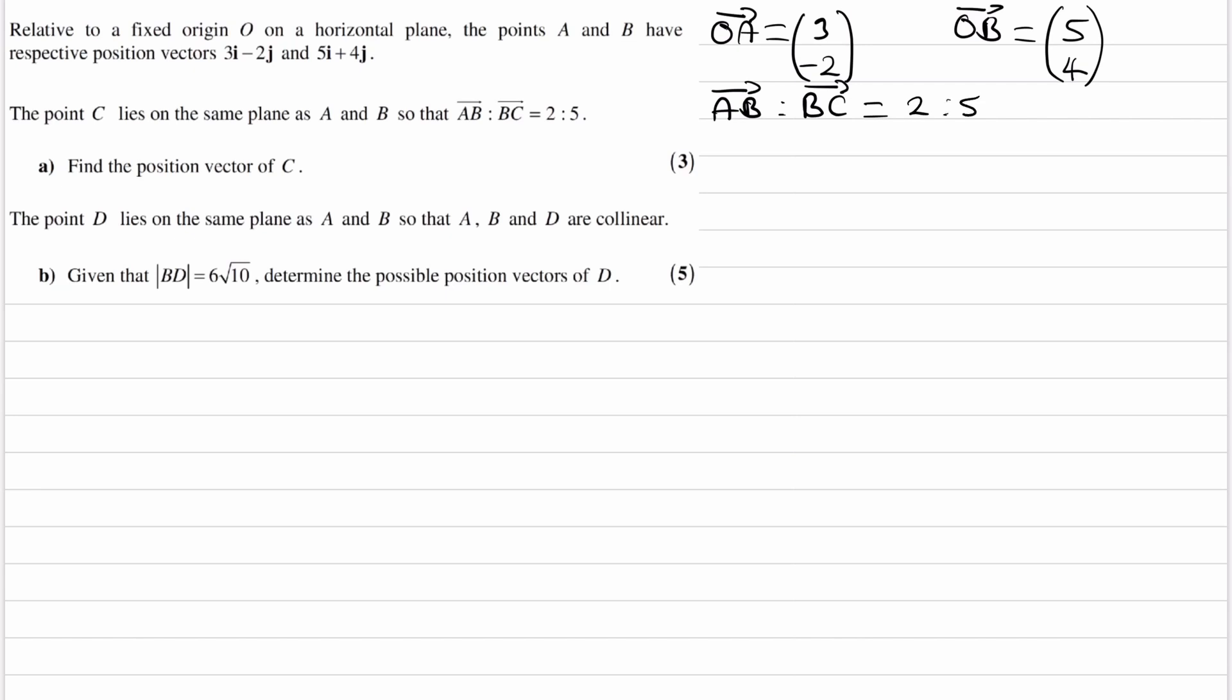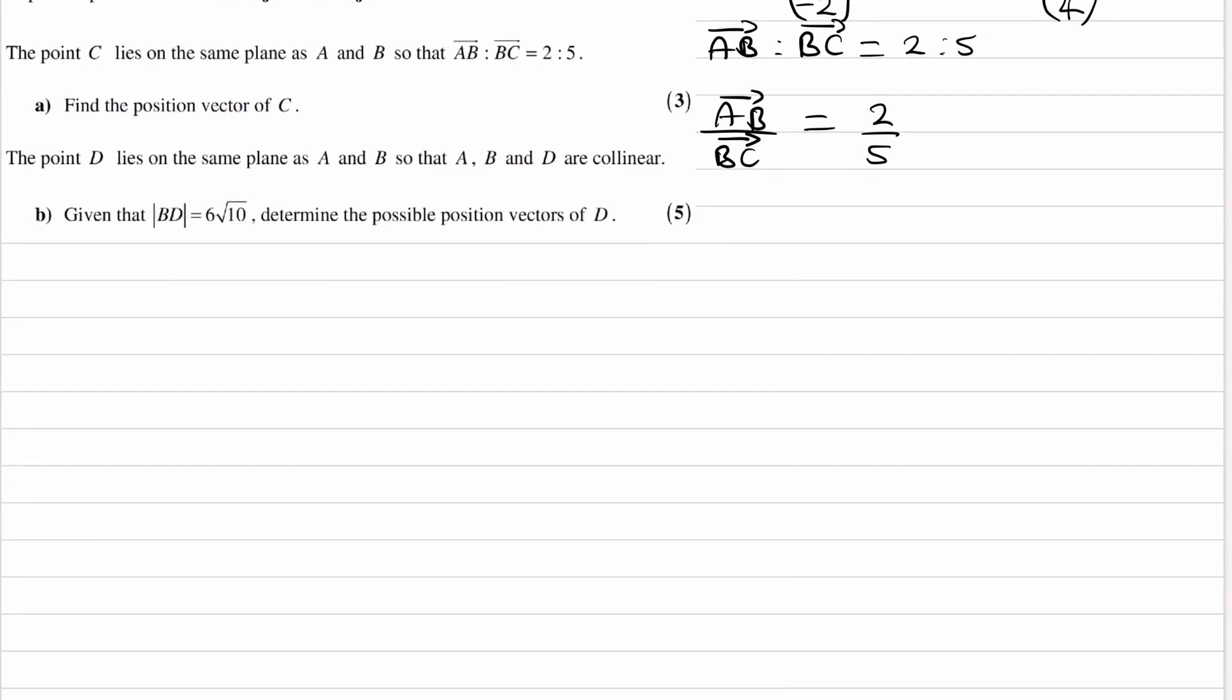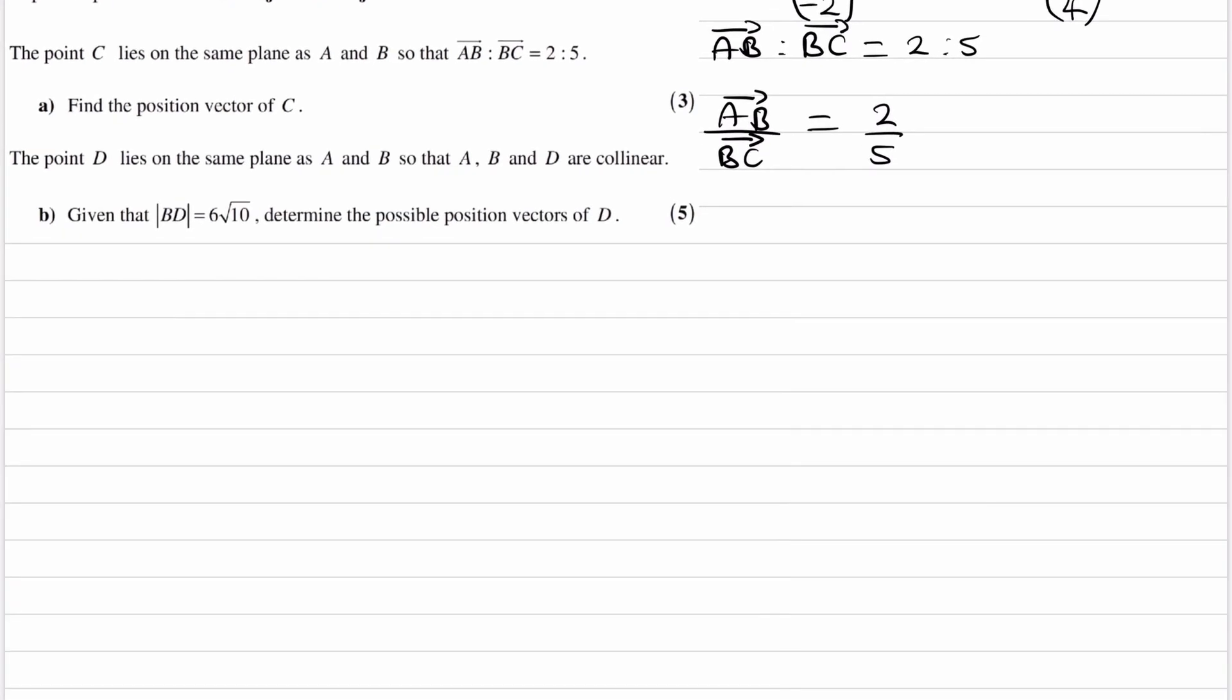This equation can then become AB divided by BC, so these two vectors divided by each other, is 2 over 5. And that would mean if I were to rearrange for AB, AB is equal to 2/5 of BC.